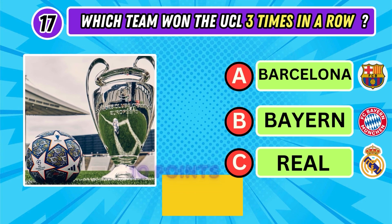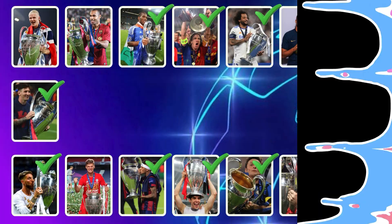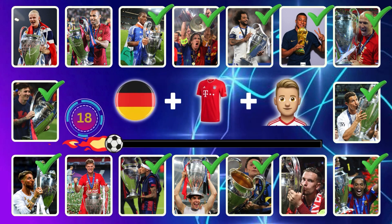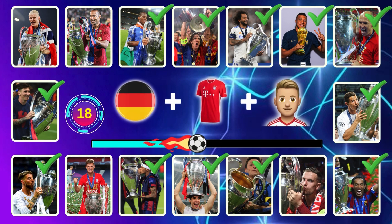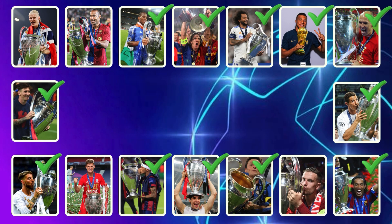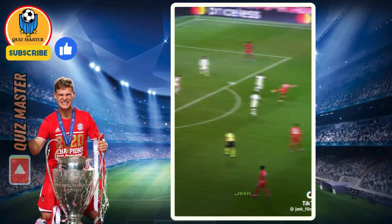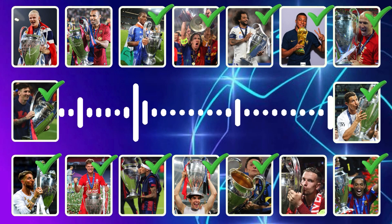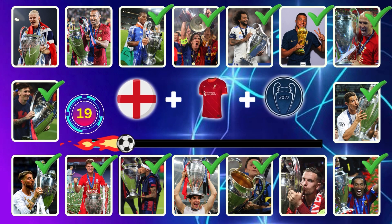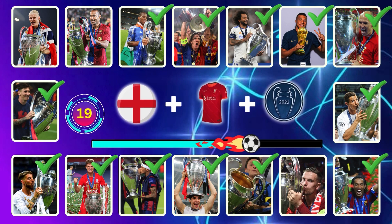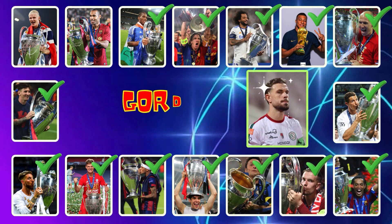Please leave a comment below and you get 10 points. Number 18: guess the player by nationality and club shirt. The player is Jordan Henderson.